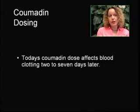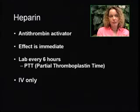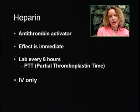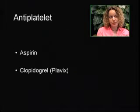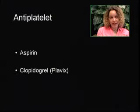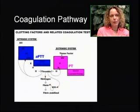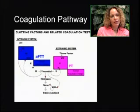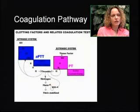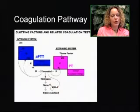Today's Coumadin dose affects blood clotting two to seven days later. Heparin is an antithrombin activator; this effect is immediate. We want to check the PTT every six hours while the patient is on a heparin drip. Other antiplatelets include aspirin and clopidogrel or Plavix. The coagulation pathway shows where Coumadin therapy interferes, and on the other side we can see where heparin interferes in the intrinsic system.